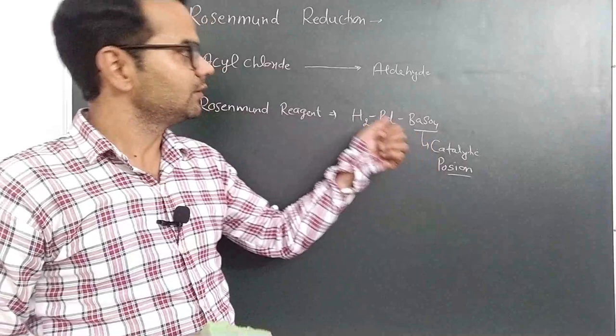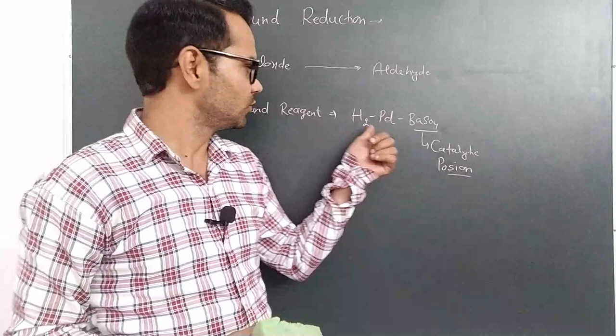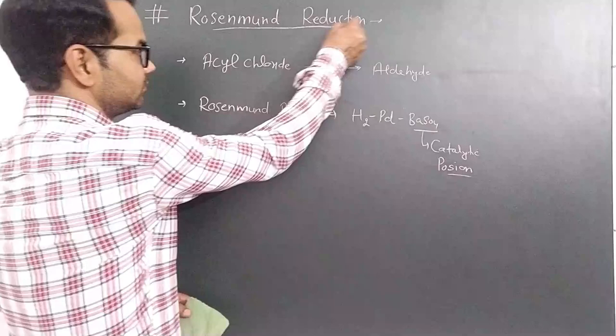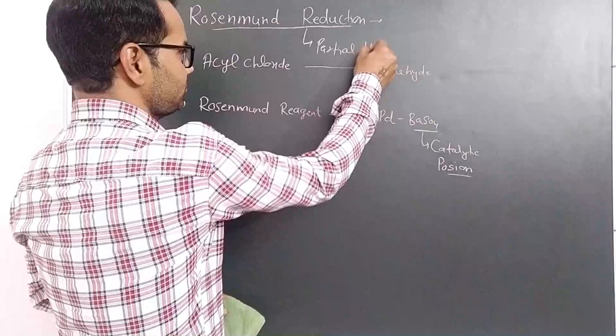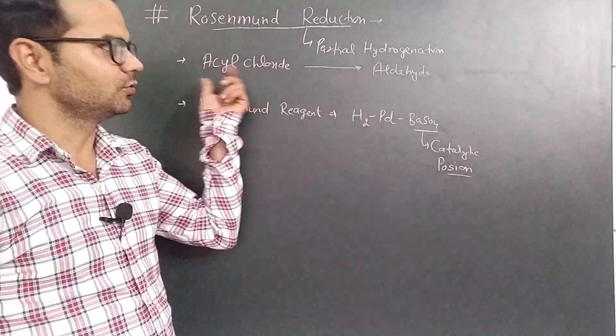If we don't use barium sulfate, then aldehyde will not form as the major product. The aldehyde will be further reduced by the activity of hydrogen adsorbed on the surface of palladium to alcohol. So the catalytic poison controls the reductional activity of hydrogen — we can say it is partial hydrogenation. Rosenmund Reduction is a partial hydrogenation of acyl chloride to the corresponding aldehyde.